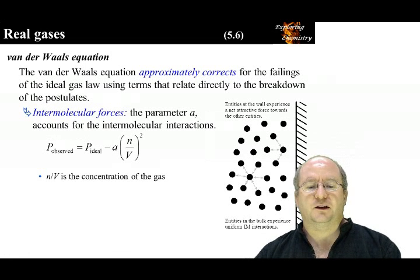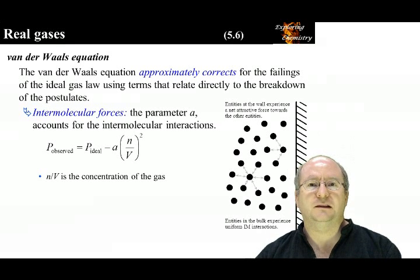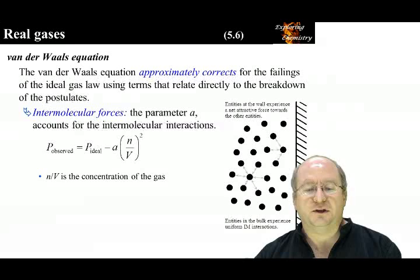The intermolecular forces correction is not direct. We assume that there is an attractive intermolecular force between gaseous entities, given the symbol A. Again, A depends on the gas. Because of the attractive intermolecular force, the molecules hit the wall with less force, which is observed as a reduction in the pressure.